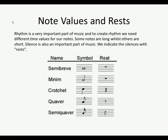You can see here the different names, symbols, and rests. We have a semi-breve, which is a whole note, a minim, a crotchet, a quaver, and a semi-quaver. To the right of them you can see the rests that are equivalent: a semi-breve rest, a minim rest, a crotchet rest, a quaver rest, and a semi-quaver rest.